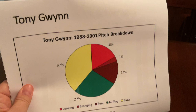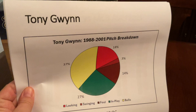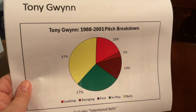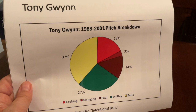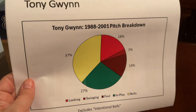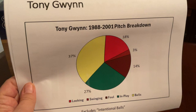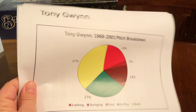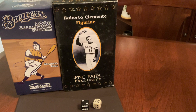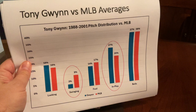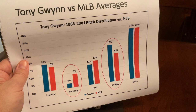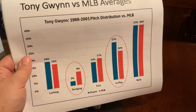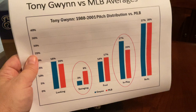Excluding intentional balls, here's the breakdown of Tony's pitches: 18% were called strikes, only 3% were swinging strikes, 14% were fouls, 27% were put in play, and 37% were balls. Comparing against major league averages, what really distinguished Tony is that when he was swinging the bat he was going to make contact — very small percentage of swinging strikes and conversely a pretty high in-play percentage. The rest is somewhat normal.